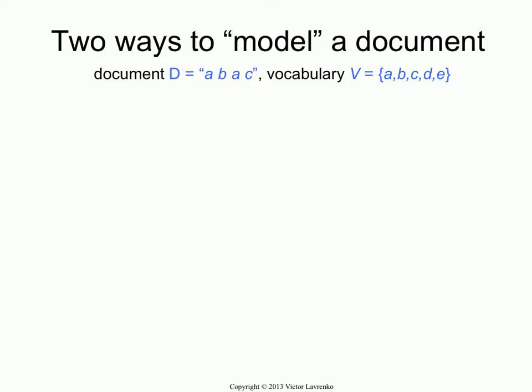First let's recap what the probabilistic model does. We have a document and this is our vocabulary — the words are A, B, C, D, E. The document has the words A, B, A, C as a sequence, and of course we're going to throw away the word order, so really you have three words A, B, and C, with one of them repeated twice. The classical model represents the document as a set — a multiple Bernoulli model — a set of terms or a binary vector.